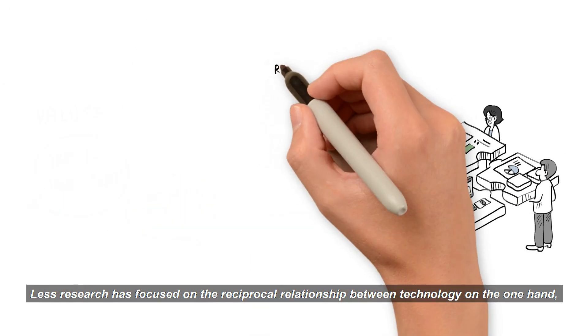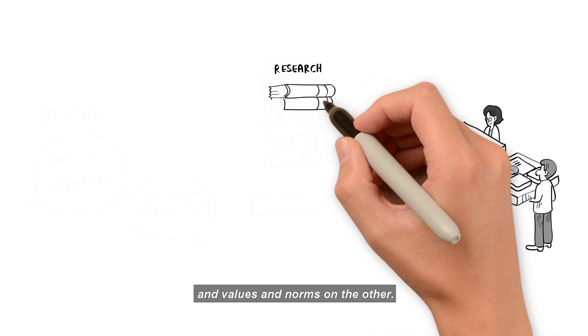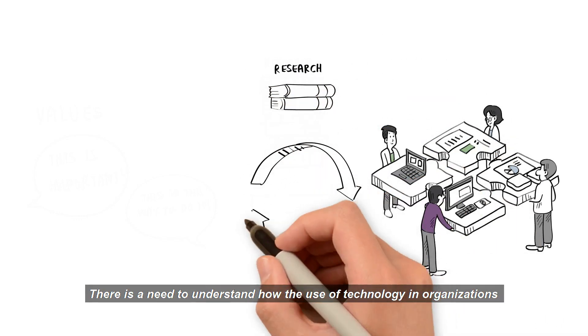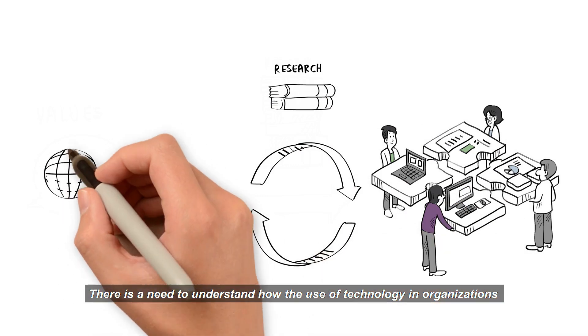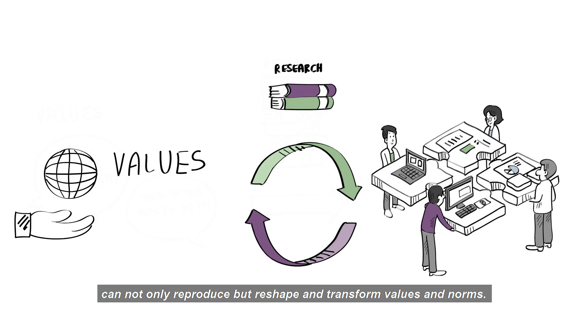Less research has focused on the reciprocal relationship between technology on the one hand and values and norms on the other. There is a need to understand how the use of technology in organizations can not only reproduce but reshape and transform values and norms.